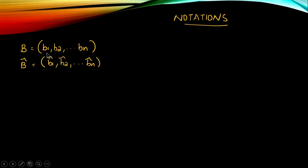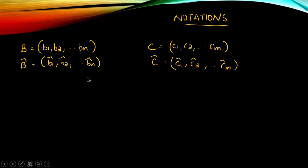The basic notations are: B = {b₁, b₂, …, bₙ}, B̂ = {b̂₁, b̂₂, …, b̂ₙ}, C = {c₁, c₂, …, cₘ}, and Ĉ = {ĉ₁, ĉ₂, …, ĉₘ}. The dimension of vector space V is n, because we have n basis vectors. The dimension of W is m.